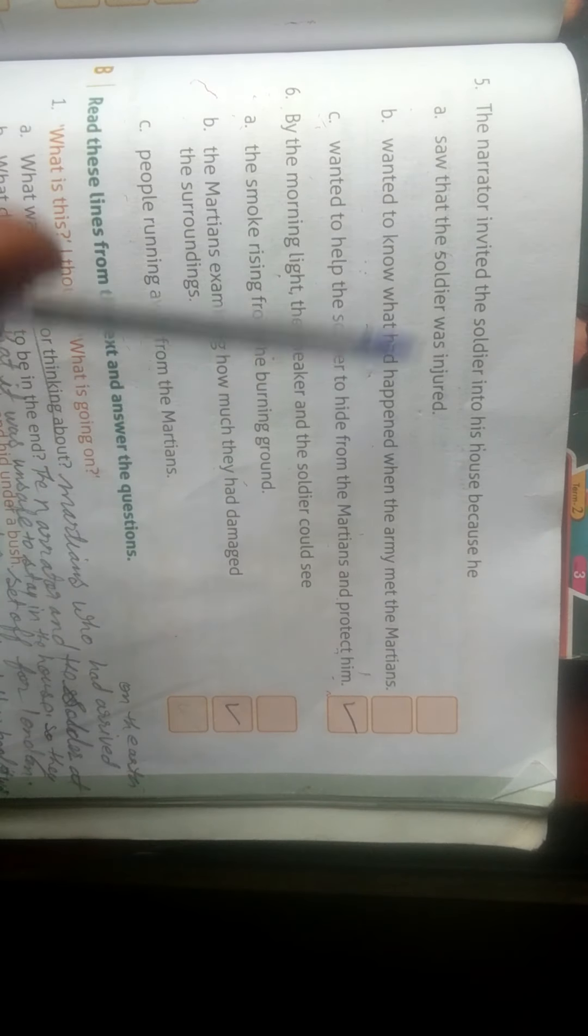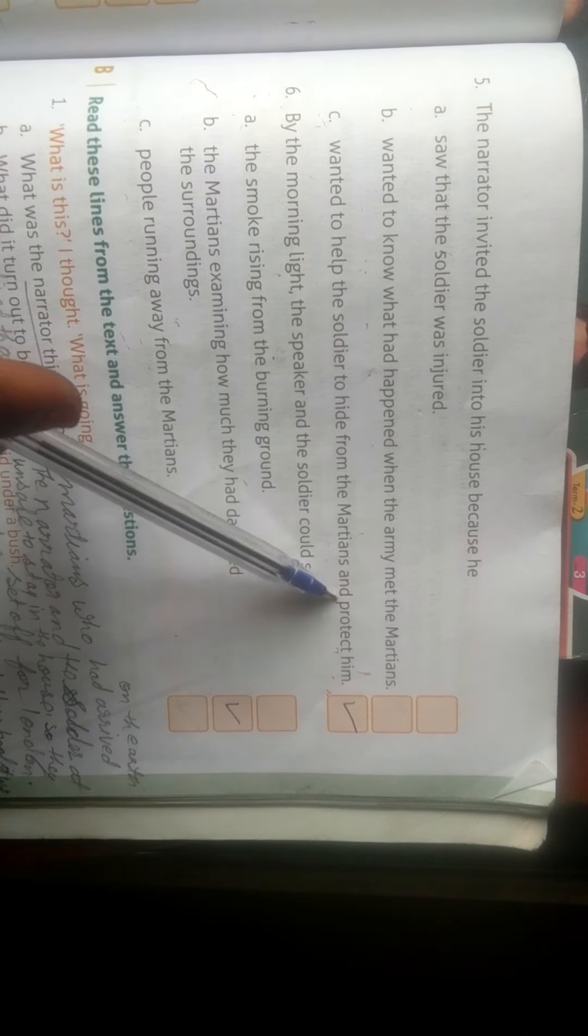Five, the narrator invited the soldier into his house because he: A, saw the soldier was injured; B, wanted to know what had happened when the army meet the Martians; C, wanted to help the soldier to hide from the Martians and protect him. The correct answer is C, wanted to help the soldier to hide from the Martians and protect him.